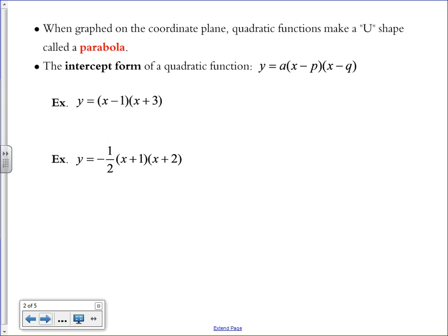This is one form of a quadratic function called the intercept form. It's Y equals A times parentheses X minus a constant times another parentheses X minus a constant. If it's given to you in this form, we still have this A value, which tells us whether the parabola opens upward or downward.